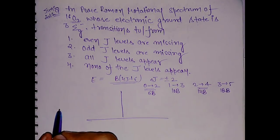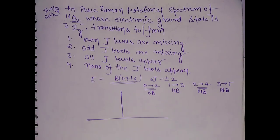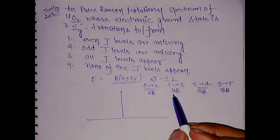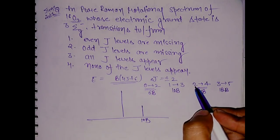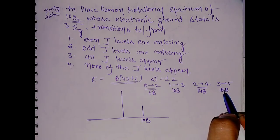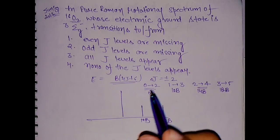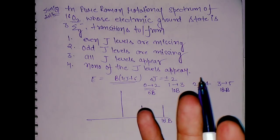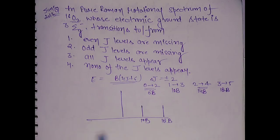This is anti-Stokes and this is Stokes, so this 6B will not be there, only 10B will be there. Same which is originating from even, it won't be there and 18B will be there. In normal Raman spectra we have 6B, 10B, 14B, but this is abnormal. Same here for the Stokes line.